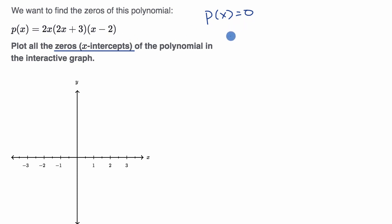So essentially we have to say, what x-values would make 2x times (2x+3) times (x-2), because this is p(x), what x-values would make this equal to zero?